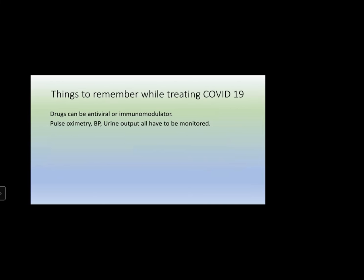What are the things to remember while treating COVID-19? Drugs can be either antiviral or immunomodulatory — it is not always necessary to kill the virus. We can down-regulate immunity, inhibit viral replication, or inhibit viral enzymes. In any form of treatment, we should monitor pulse oximetry, BP, and urine output — these three things must be monitored.